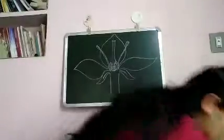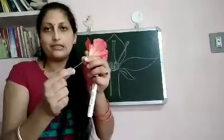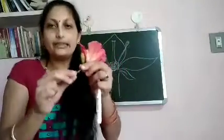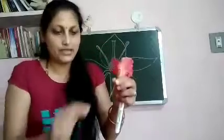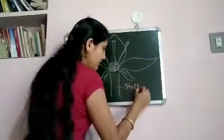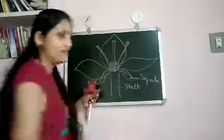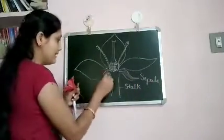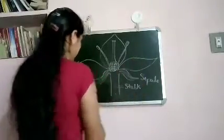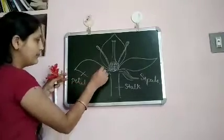There is also this thin tubular structure, which is called the stalk. This connects the flower to the stem or the branch. Then we have the sepals — those green leaf-like structures — and the petals, those colored parts of the flower.